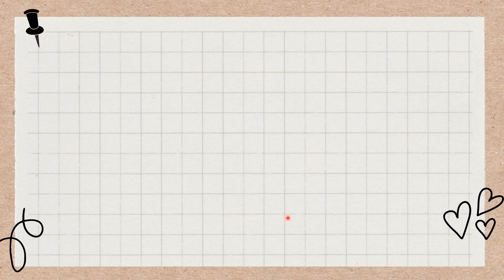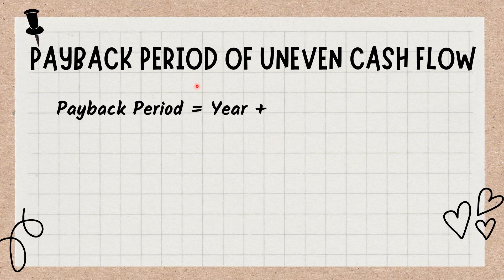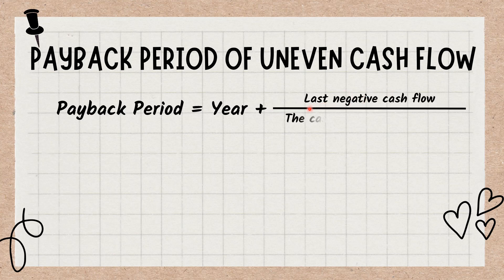The payback period for uneven cash flow can be calculated by taking the cumulative balance of each cash flow. We need to subtract that from the investment and write down the figures. When we get a positive number, we will call that the payback year. Then calculate the fractional period by taking the last negative cash flow and dividing that by the cash flow in the next year. Let's take an example.